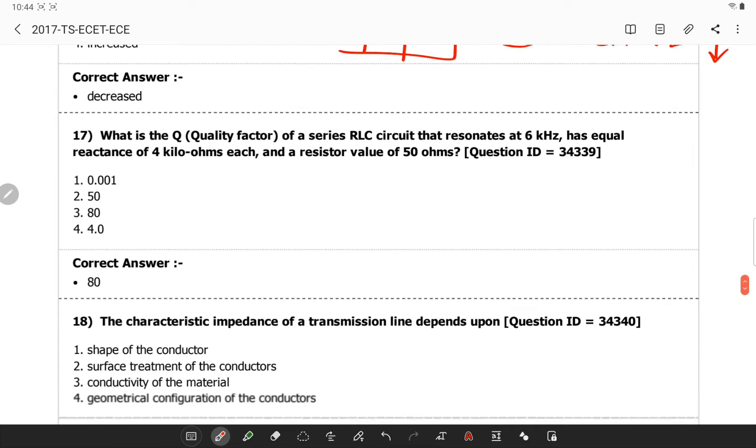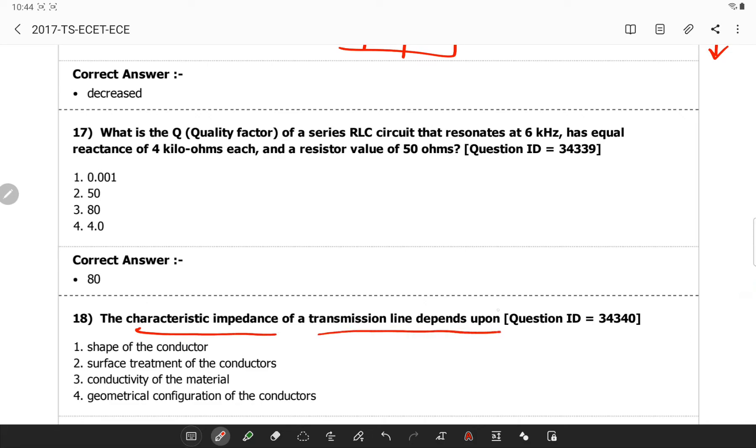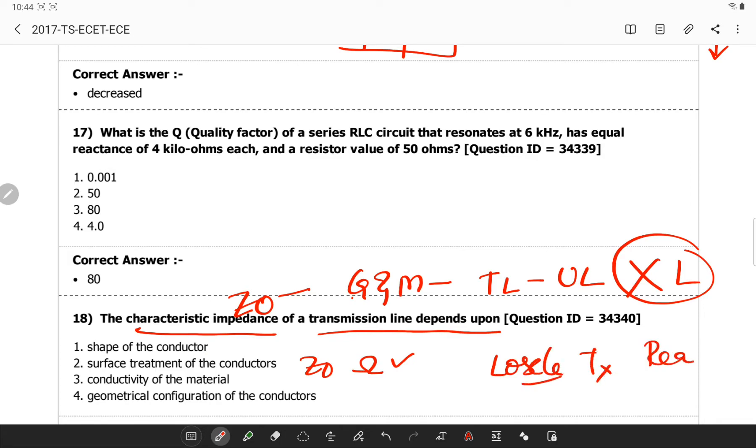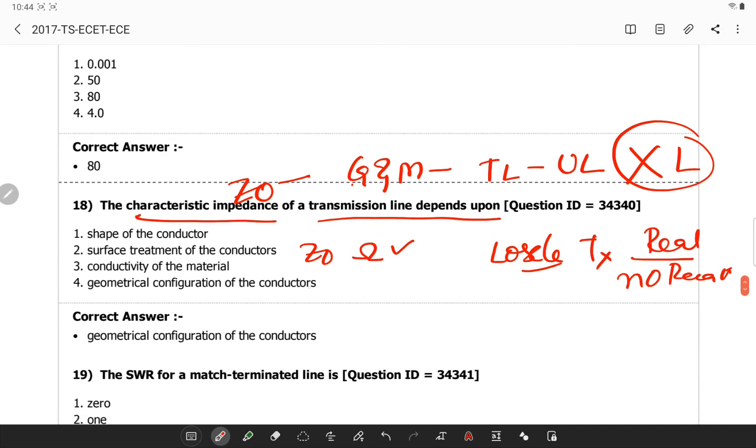The characteristic impedance of a transmission line depends upon, so characteristic impedance Z knob is determined by the geometry and materials in the transmission line for a uniform line. It is not dependent on length. The SI unit of characteristic impedance is ohm and characteristic impedance of a lossless transmission line is purely real and it will not be having no reactive component. If you observe, geometrical configuration of the conductors is important.